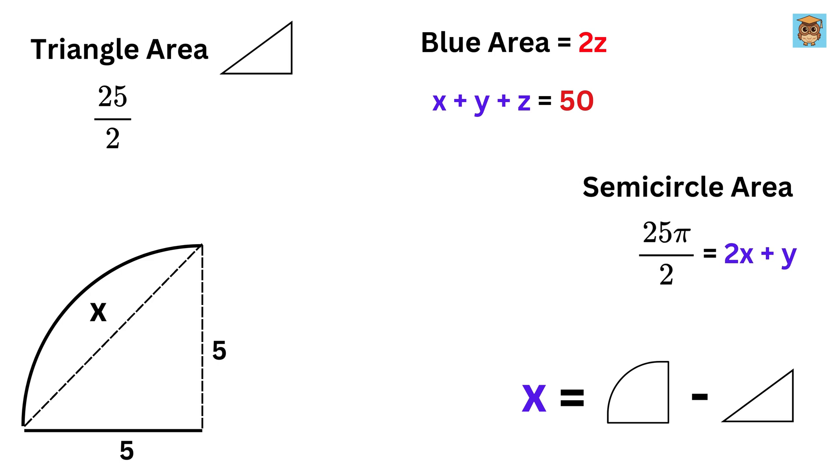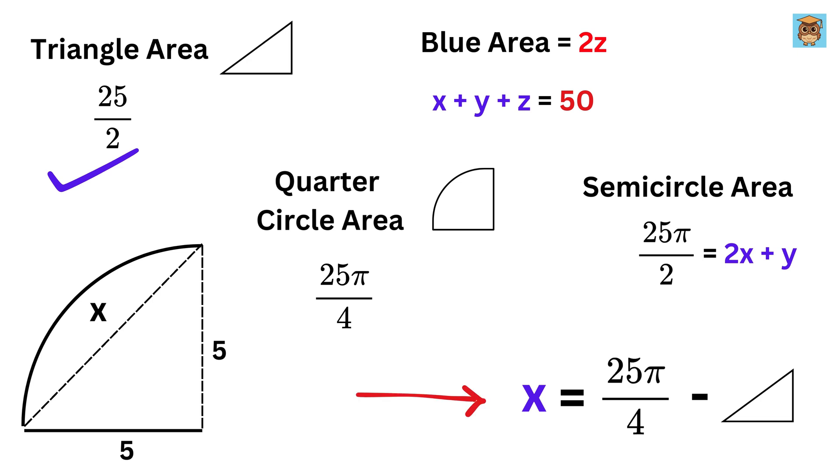The area of the quarter circle is pi times 5 squared, divided by 4, which simplifies to 25 pi over 4. The triangle's area is 25 over 2, so x is equal to 25 pi over 4 minus 25 over 2.